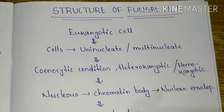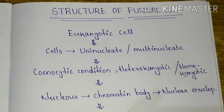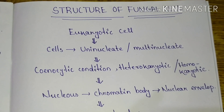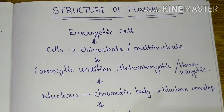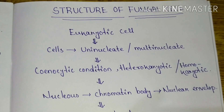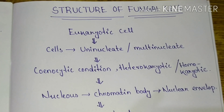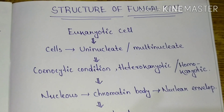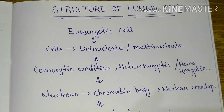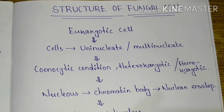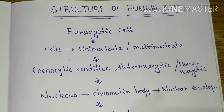The fungal cells may be uninucleate, binucleate, or multinucleate in structure. Uninucleate means a single nucleus is present in the cell. Binucleate means two nuclei are present, and multinucleate means multiple nuclei are present. In the multinucleate condition, the cell may be set in a coenocytic condition.